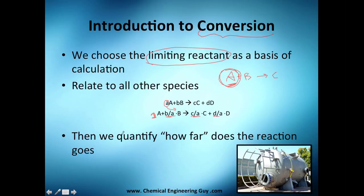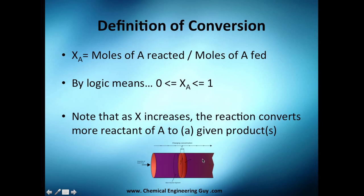We also need to quantify how far the reaction has gone — how much of A is reacting to give products. That's where we get the definition of conversion. Mathematically, conversion of species A equals the moles of A that have already reacted divided by the moles of A that were fed into the reactor.